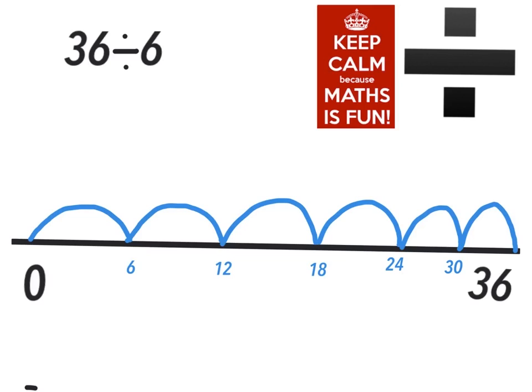Finally, count the number of groups used to make the total: 1, 2, 3, 4, 5, 6. So 36 divided by 6 is 6.